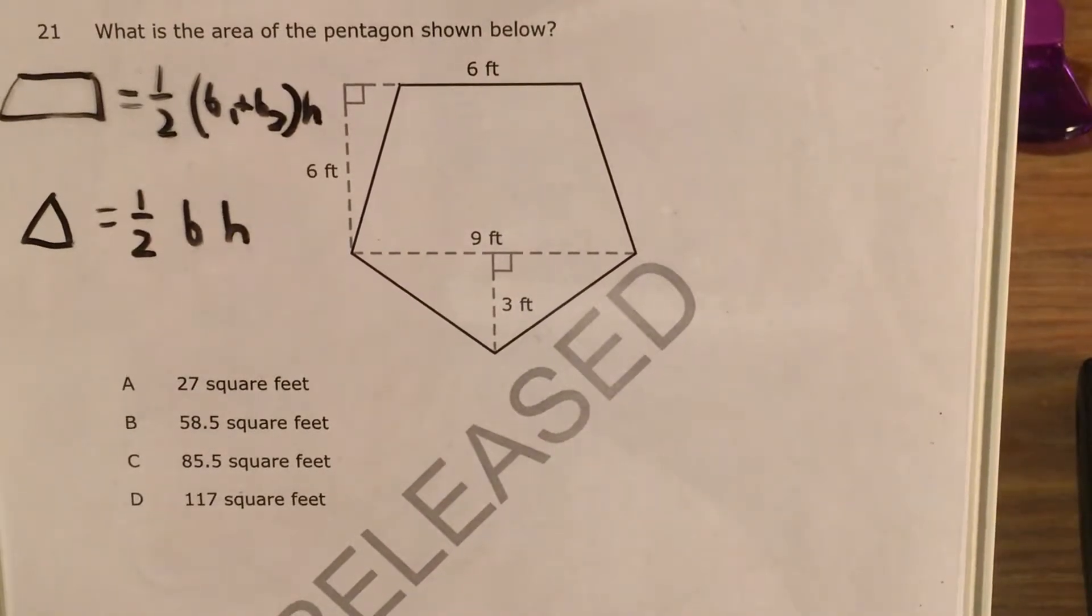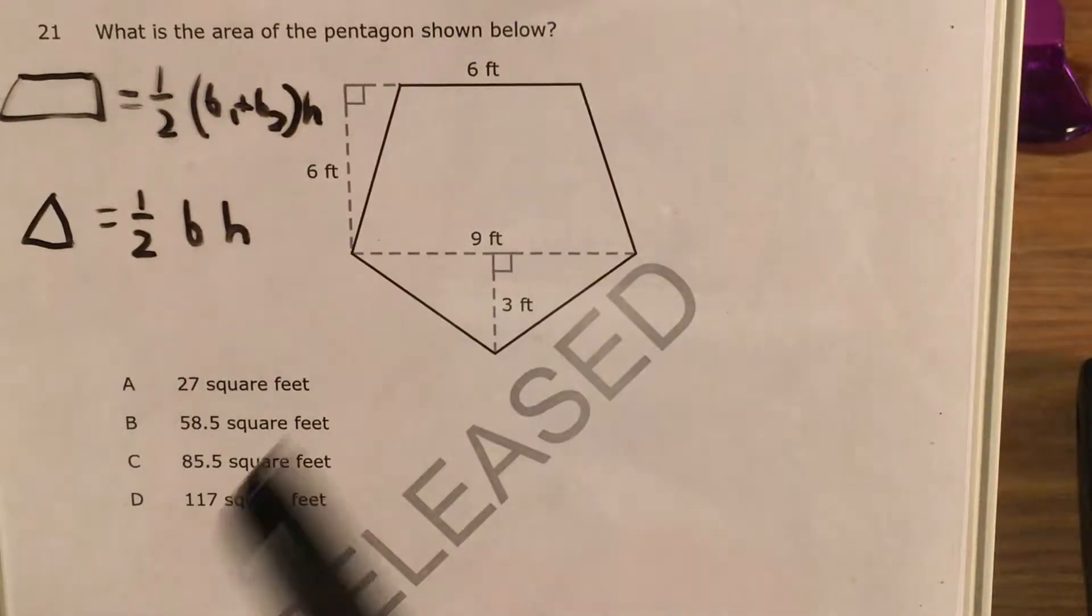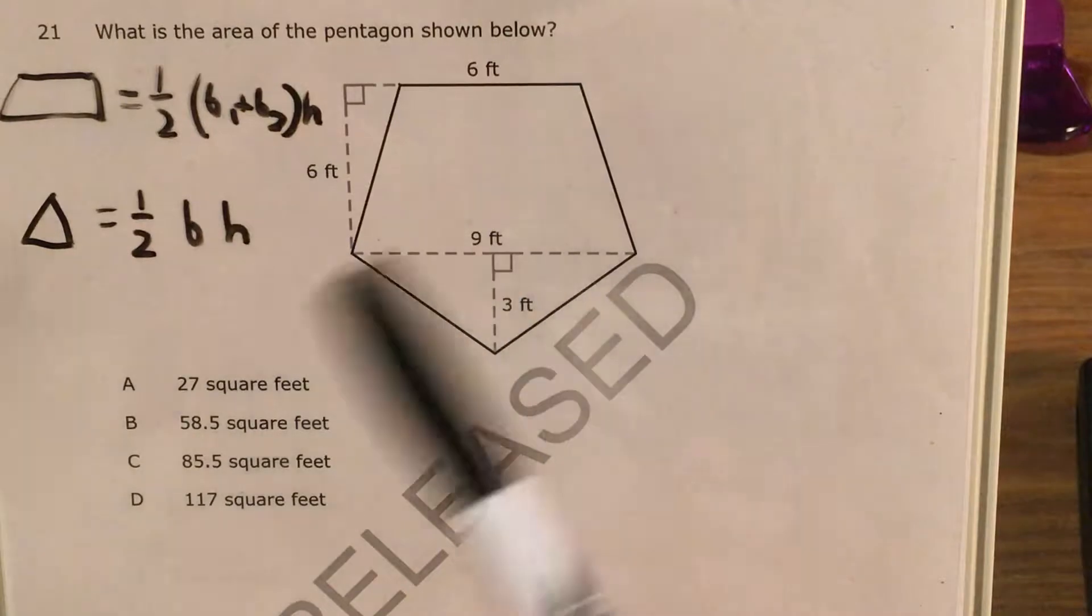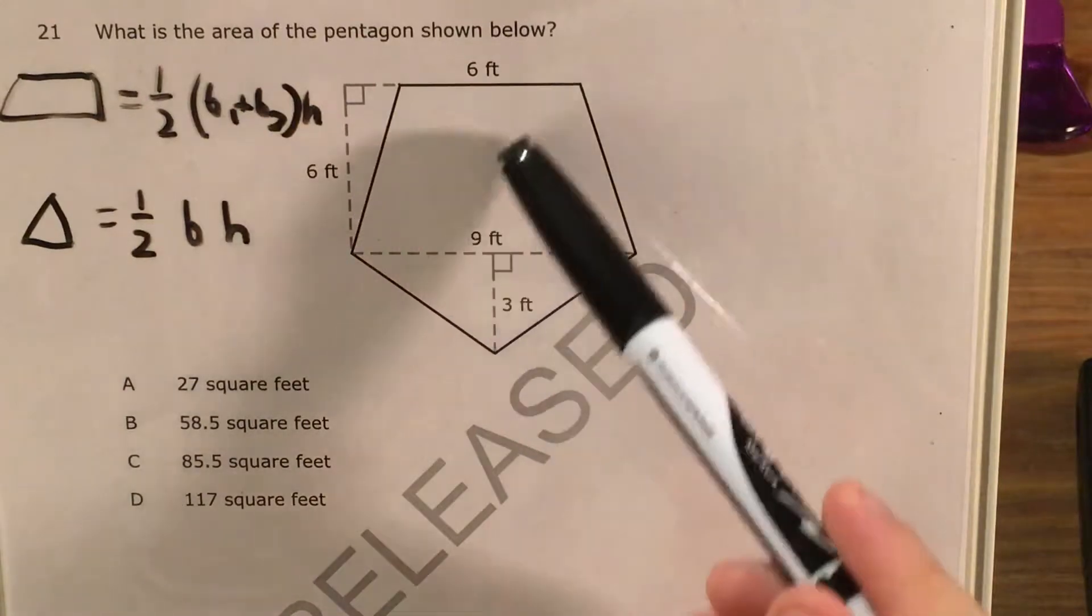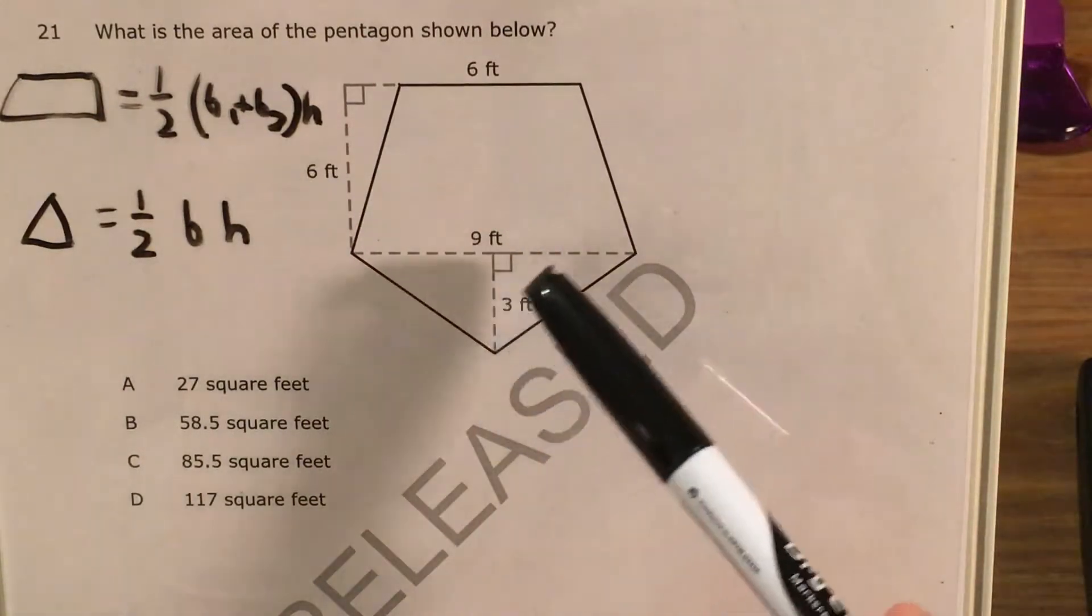What's up math scholars and math haters? This is Mr. W. Today we're going to tackle question 21 in the sixth-grade math questions that North Carolina released this past school year. We can see that we're just trying to find the area of this pentagon. There's not a formula for a pentagon like there are for other shapes, but the problem does go to the trouble of splitting it up into a trapezoid and two triangles for us.